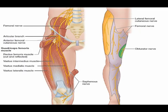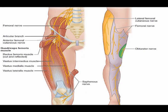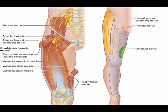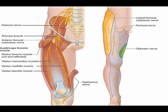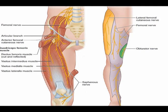So the femoral nerve — its specific nerve root levels are L2, L3, and L4, and it supplies motor and sensory innervation to the anterior compartment of the thigh.